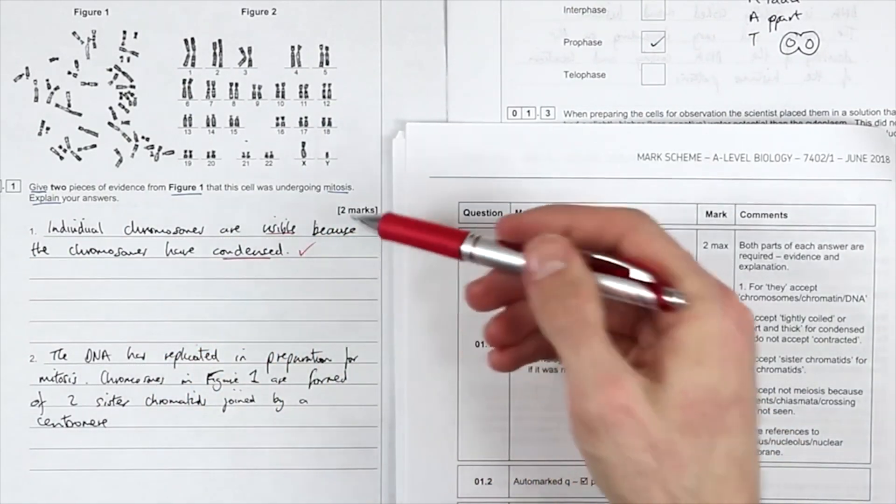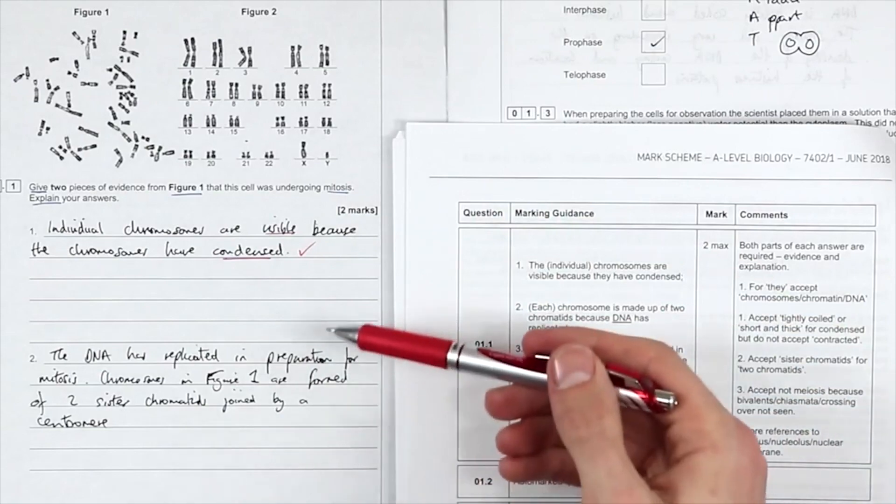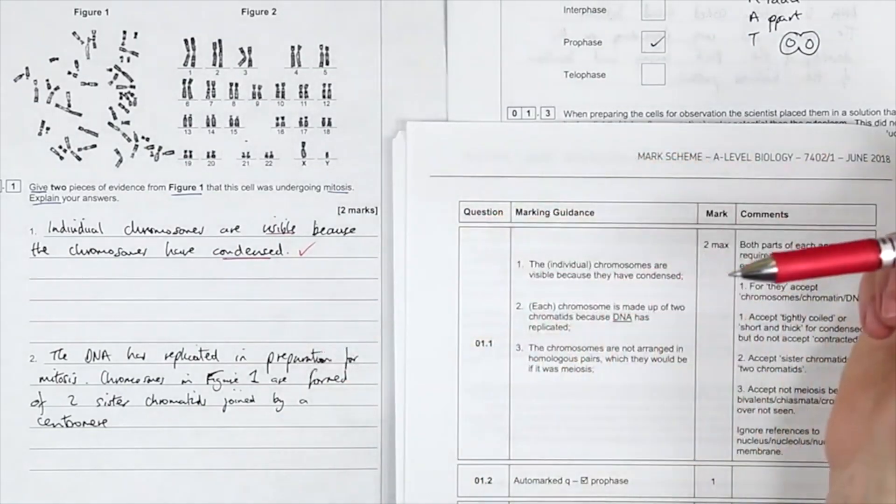Okay, they're visible because they have condensed. One mark. Look, how much space is available? You don't have to write it all. I mean, you can. There's nothing wrong with using all the space, but it will cost you time.